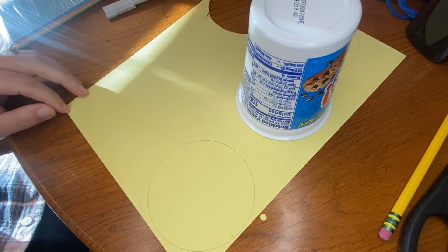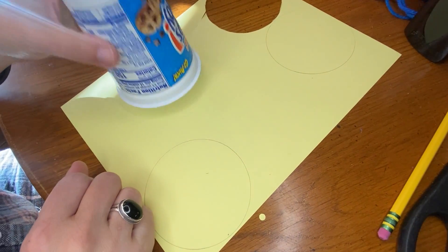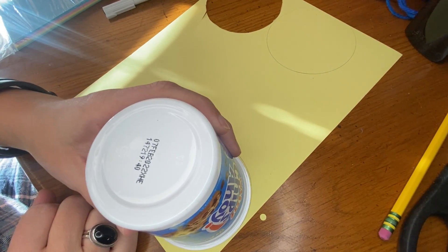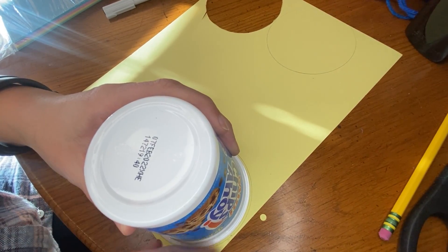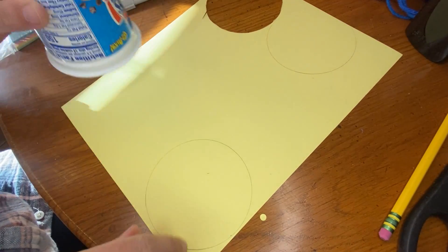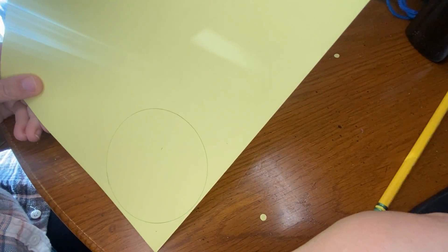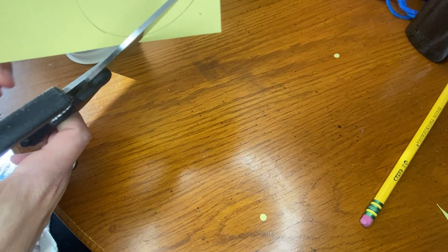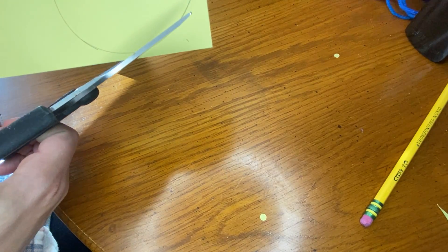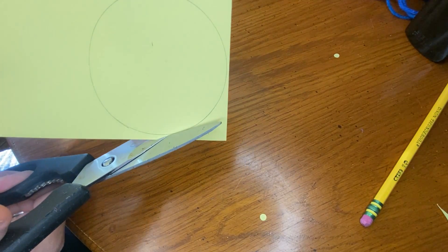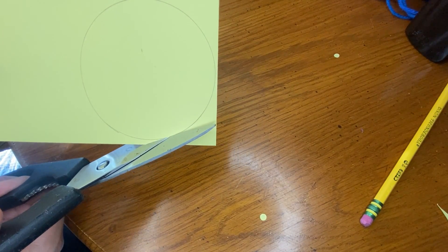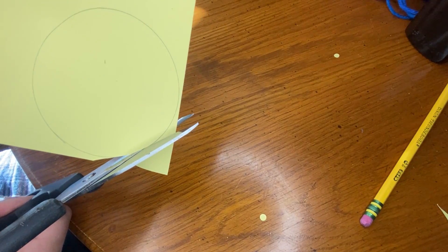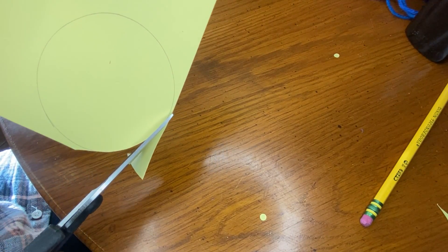Okay, so the first thing you're going to do is take your tracer and place it on your paper and draw your circle. And then you're going to take your scissors and cut out your circle. Remember that with your scissors, we're going to stick to the back half of the scissors as we're cutting, and you're turning the paper, not the scissors as you go.